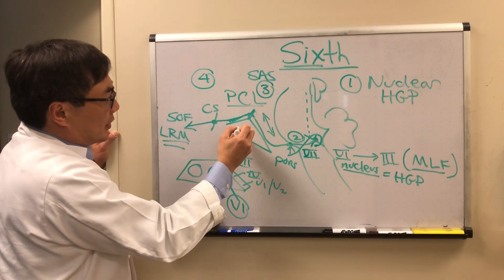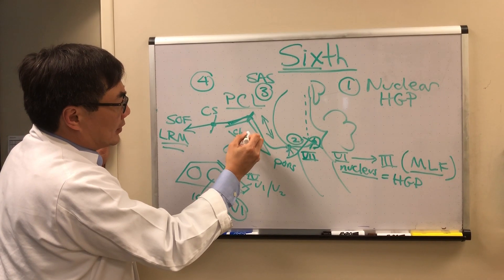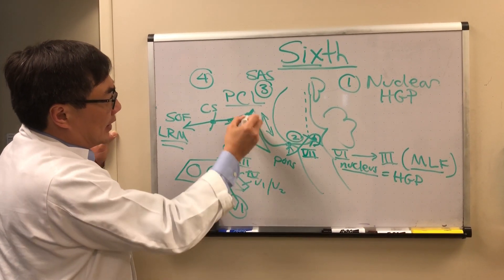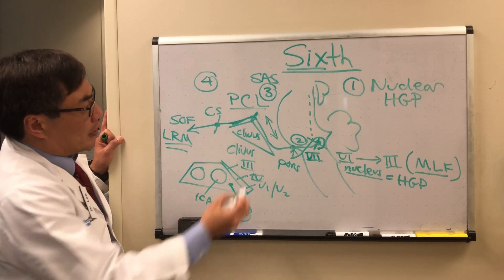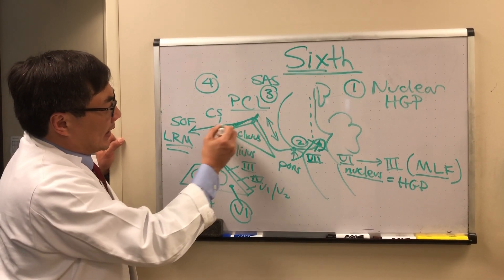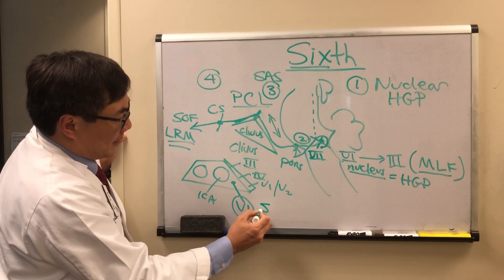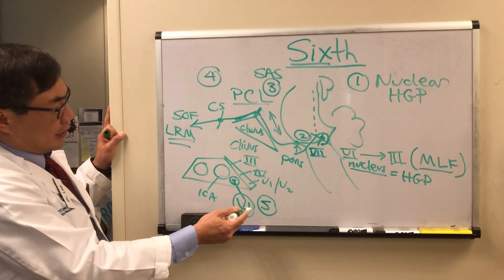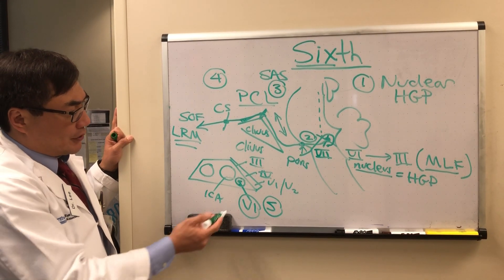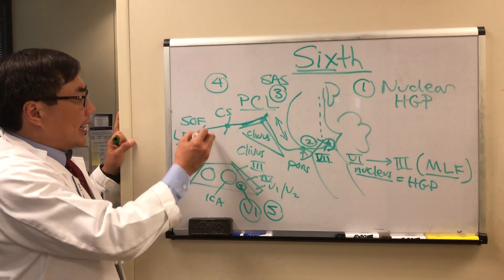You've got the clivus, which is this bone right here, so the sloping bone, the clivus. And the most common tumors here are meningioma, chordoma, or chondrosarcoma. And then the cavernous sinus syndromes are number five that affect the substance of the cavernous sinus rather than the wall. So those would be things like cavernous sinus tumors, carotid-cavernous fistulas.